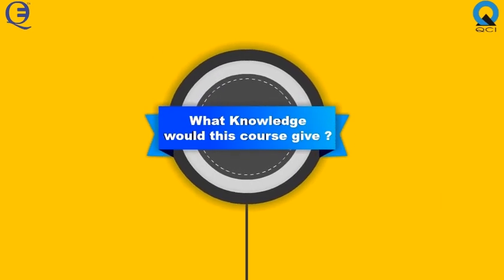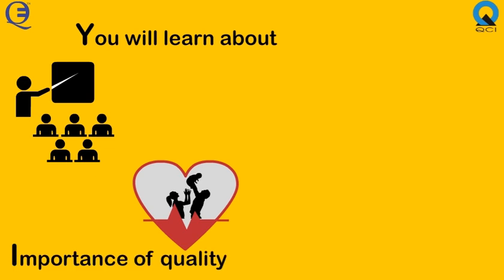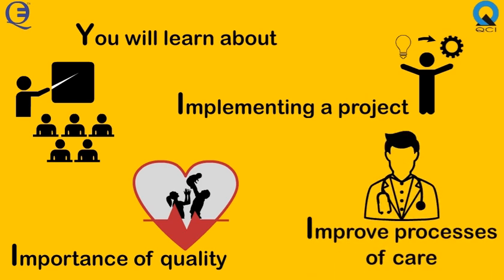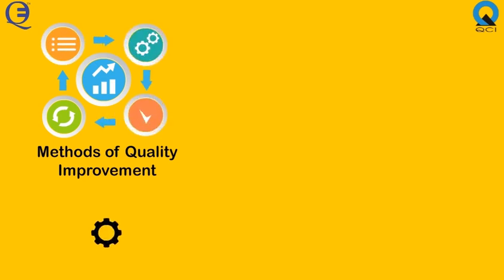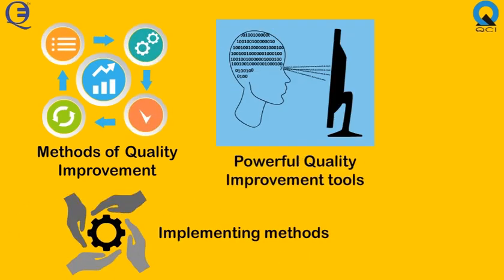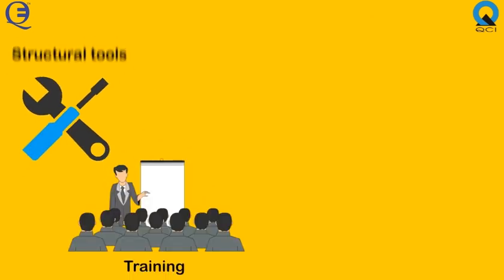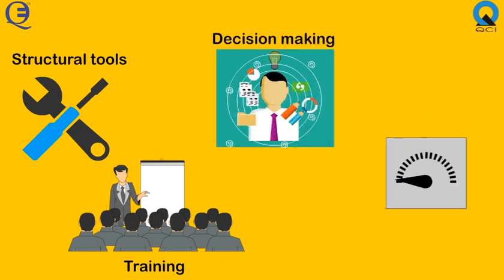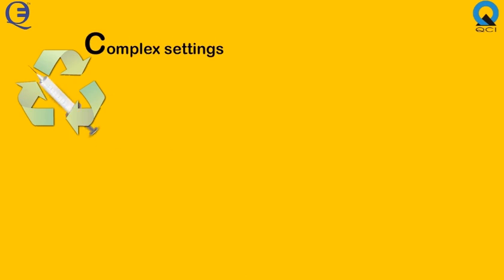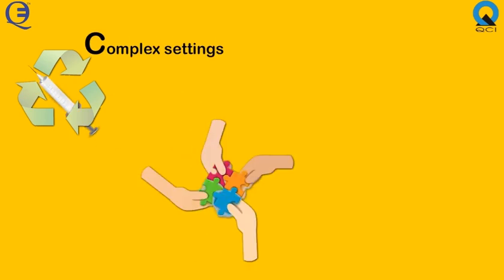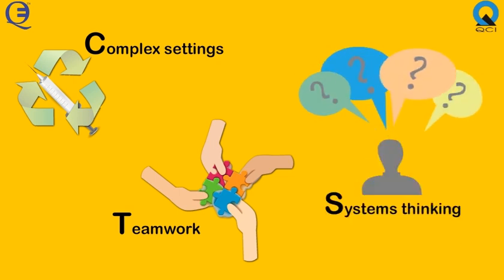What knowledge would this course give? In this course, you will learn about the importance of quality in healthcare organization and how you can contribute by implementing a project to improve processes of care and outcomes. By learning the methods of quality improvement and implementing these methods, you will add powerful quality improvement tools to your toolbox. This training helps you use structural tools for analysis, decision-making, and performance measurement. Healthcare environments are complex settings and call for a sophisticated set of collaborative teamwork skills, and system thinking is essential.